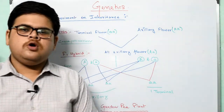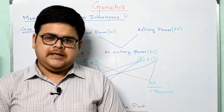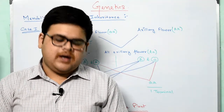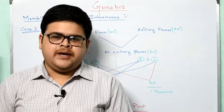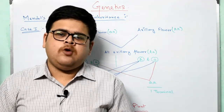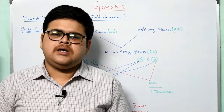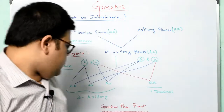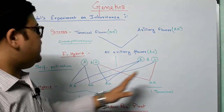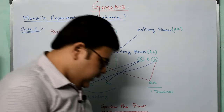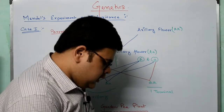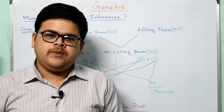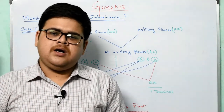Good morning dear students. We were discussing the chapter genetics. We have already learned about the previous part of this chapter, and today we will be continuing with Mendel's experiment — what Mendel did, what things we found, and why he is known as the father of genetics. Please open your book, Conscience Biology class 10, page number 30. We will be following the book so that we can understand this chapter better and clearly.